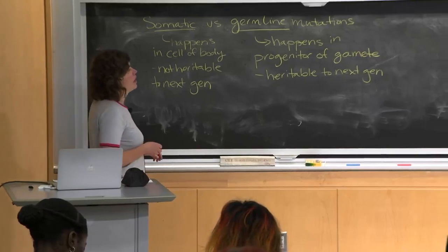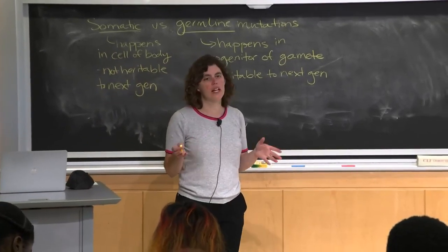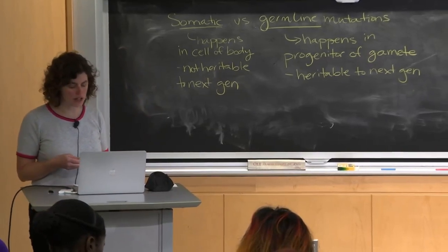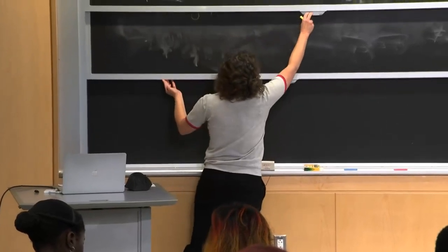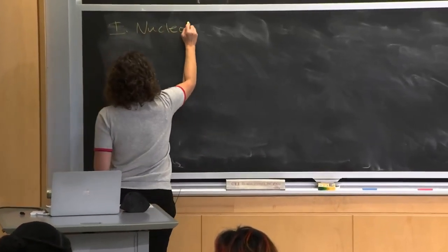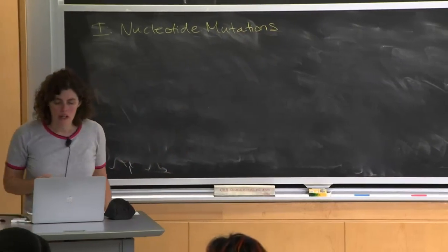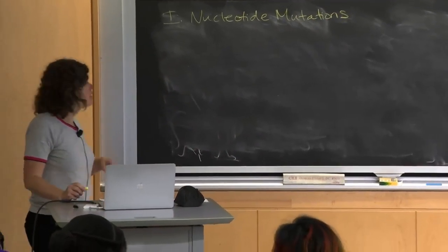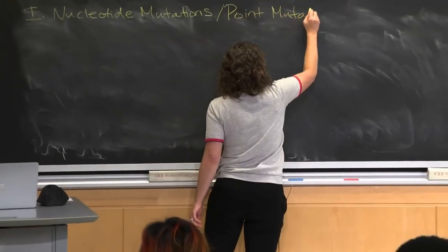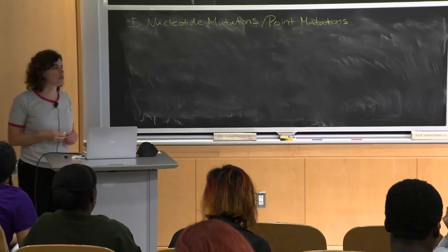I want to talk about different types of mutations that arise. I'm going to focus today on nucleotide mutations — mutations at the single base level — and then larger changes that occur on chromosomes: chromosomal rearrangements and extra chromosome copy numbers. So how do you actually get those mutations? You probably have heard about nucleotide-level mutations, sometimes referred to as point mutations. Can anybody think of some classes of mutations of interest that affect protein coding genes?